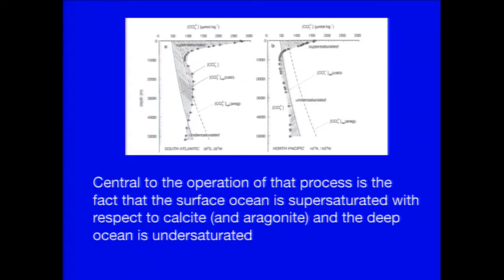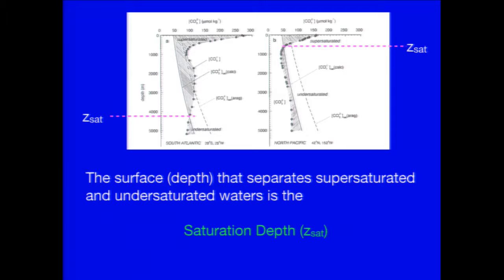The oceans are able to do this because they have a particular structure. The surface of the oceans is supersaturated, and down below it's undersaturated. So there's the potential for dissolving and preserving calcium carbonate in such a situation. And if you can move these things, you can change how much you're preserving and how much you're dissolving. The depth at which the saturation occurs in the oceans is known for the mineral calcite as the calcite saturation depth.